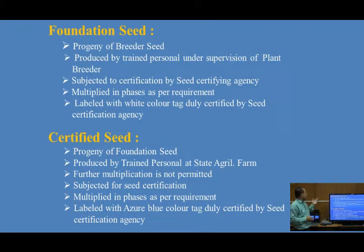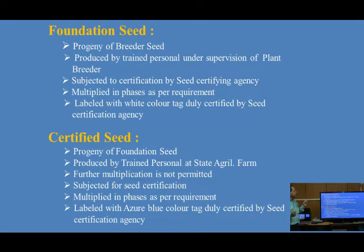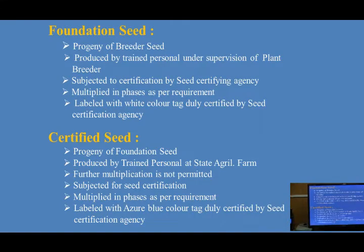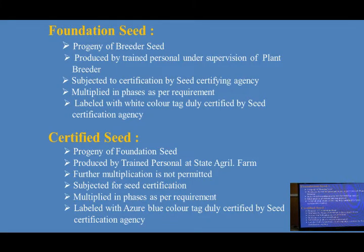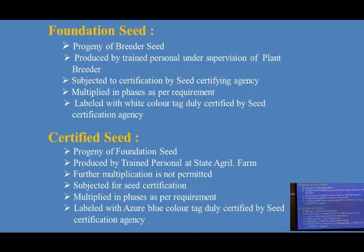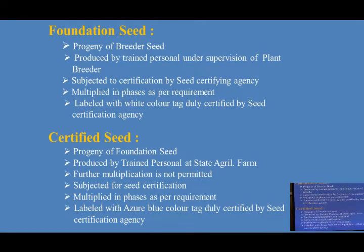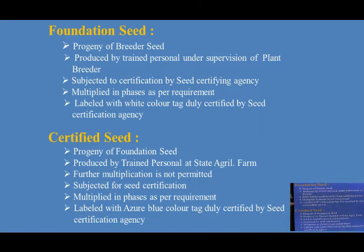The next stage is foundation seeds. It is the progeny of breeder seeds, produced by trained personnel under the supervision of the plant breeder. Foundation seed can be produced at the state farm or the agriculture farm of the state agriculture universities. It is multiplied in phases as per requirements — stage 1 and stage 2. It is labeled with the white colored tag and duly certified by the seed certification agency.